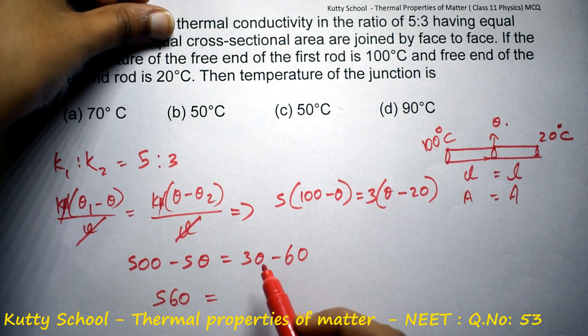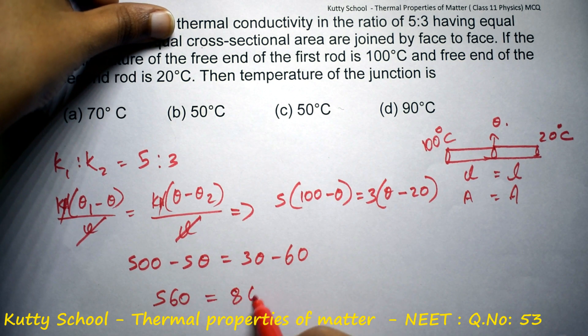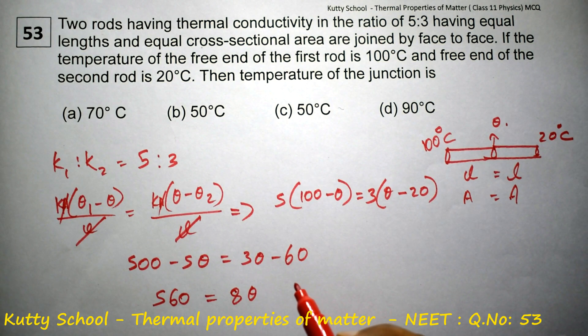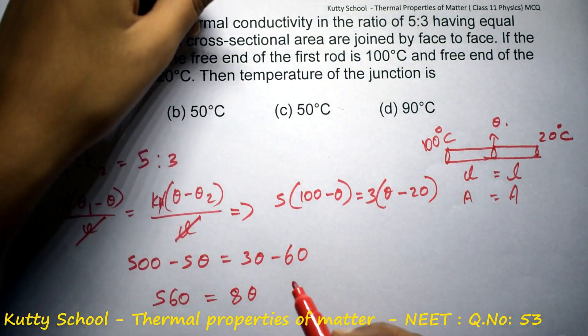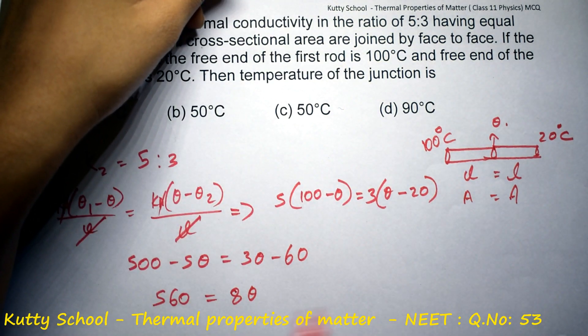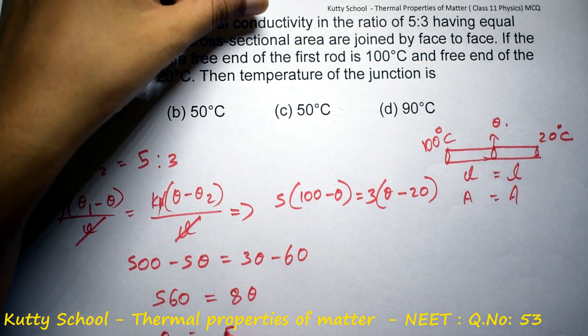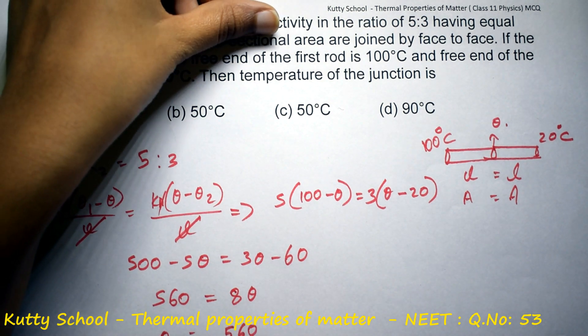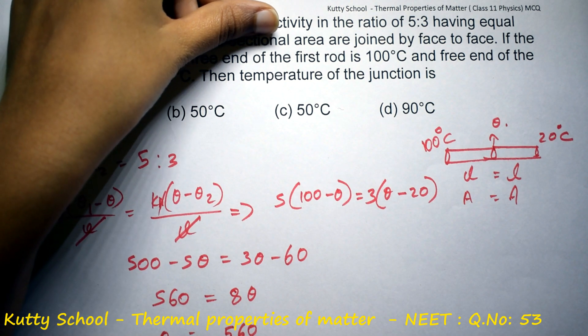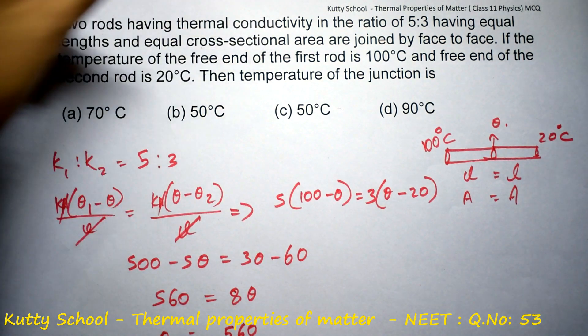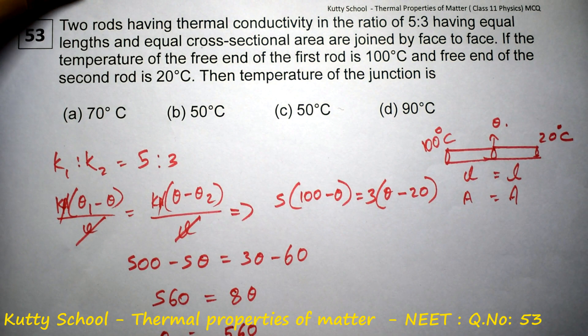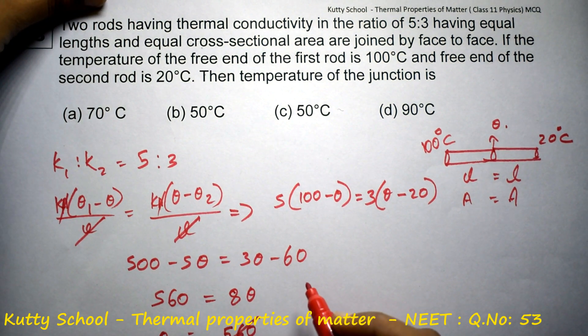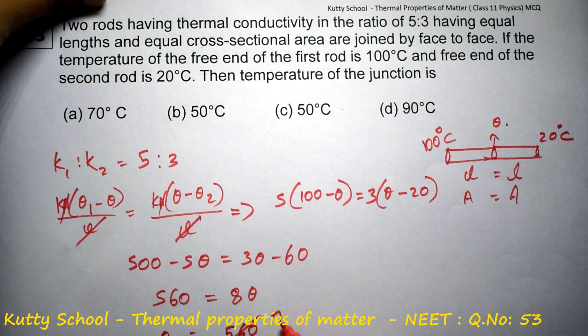560 equals 8 theta. So theta equals 560 divided by 8, which gives us 70 degrees Celsius.